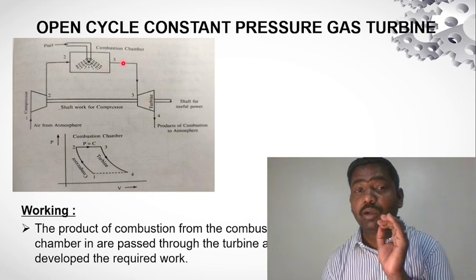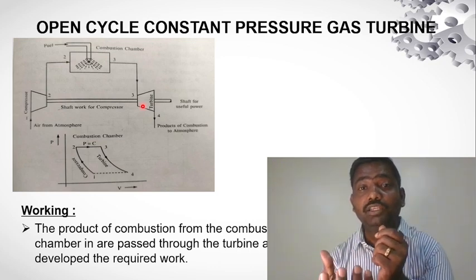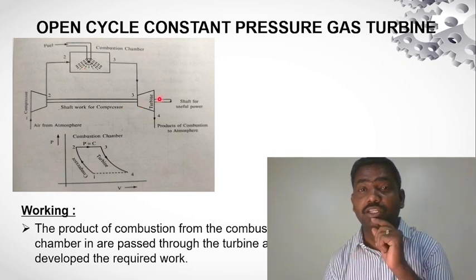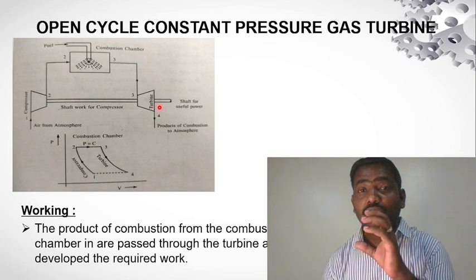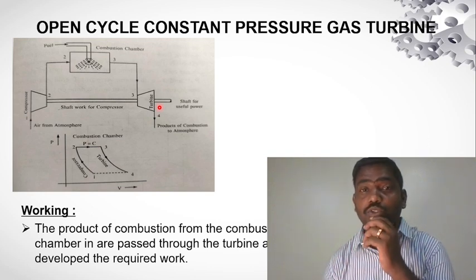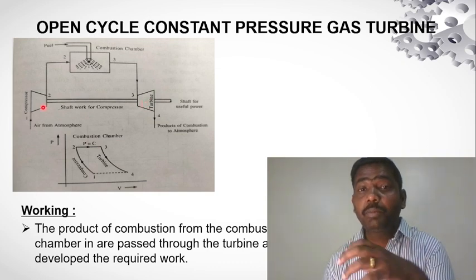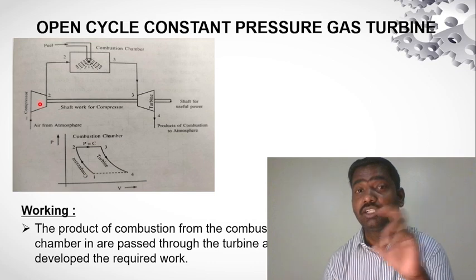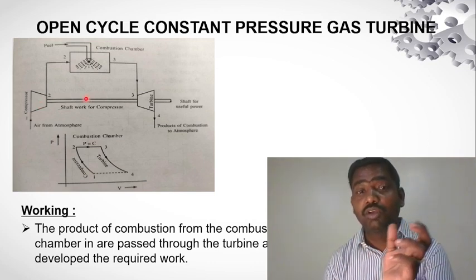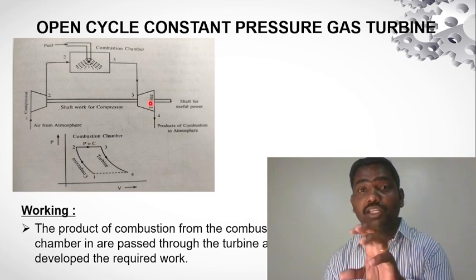The combustion gases from the combustion chamber are passed through the turbine, developing the required work output. When the combustion gases enter the turbine, the turbine will rotate and generate power.